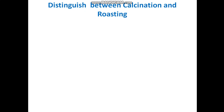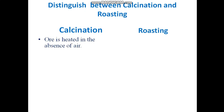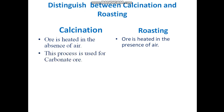Here is a quick look at the distinction between calcination and roasting. In calcination, the ore is heated in the absence of air or with a limited supply of air. In roasting, the ore is heated in the presence of excess air. Calcination is used for carbonate ores, whereas roasting is used for sulphide ores.